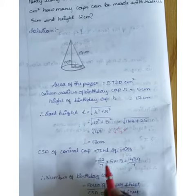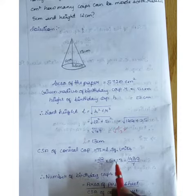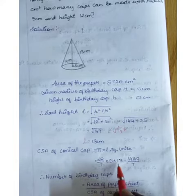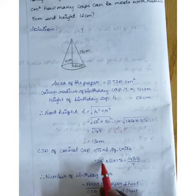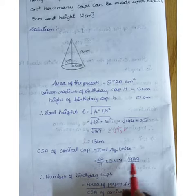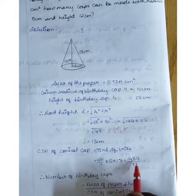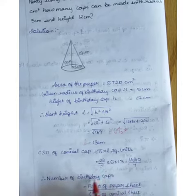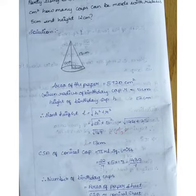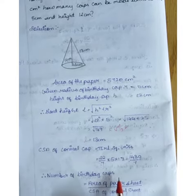The curved surface area of the cone equals πrl = (22/7) × 5 × 13 = 1430/7.